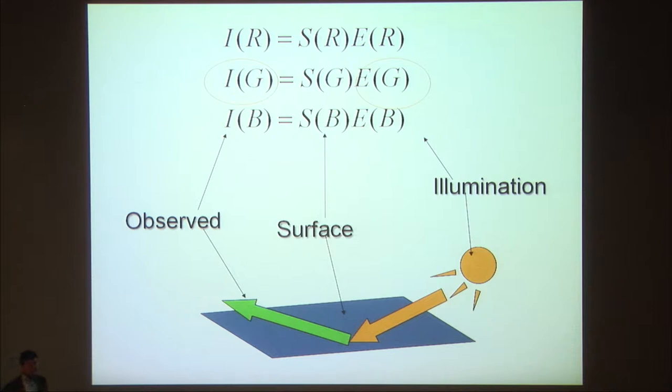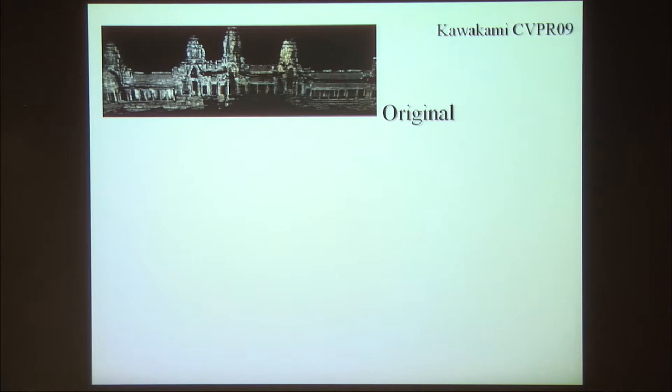Grad student Rei Kawakami came up with a good idea. If we take two images of the same scene under the assumption that illumination is a black body — and in fact the sun and sky are black body radiators — by shooting two images of exactly the same position at different times and comparing them, we can obtain real color through brightness evaluation.